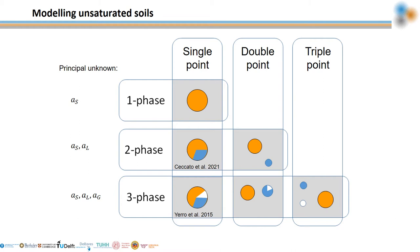In ANURA 3D, unsaturated soil can be simulated with the single-point three-phase formulation implemented by Yerro et al. in 2015, which considers the momentum and mass balance equations of solid, liquid, and gas separately, and in which the principal unknowns are the accelerations of the solid, liquid, and gas.